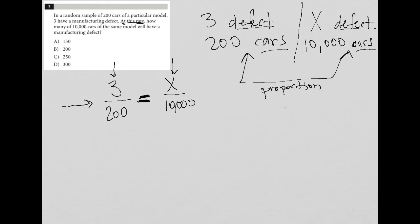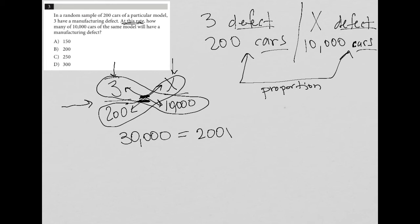So the way that we solve a proportion is by cross-multiplication. I'm going to multiply diagonally here - 3 times 10,000 equals 30,000. Then I'm going to multiply diagonally here - 200 times X equals 200X.